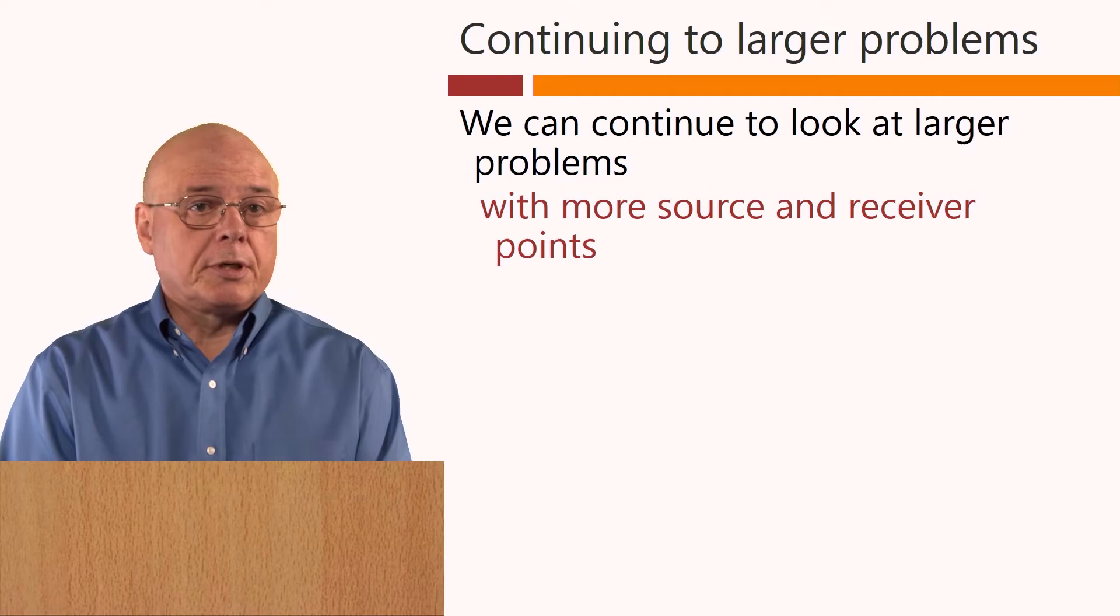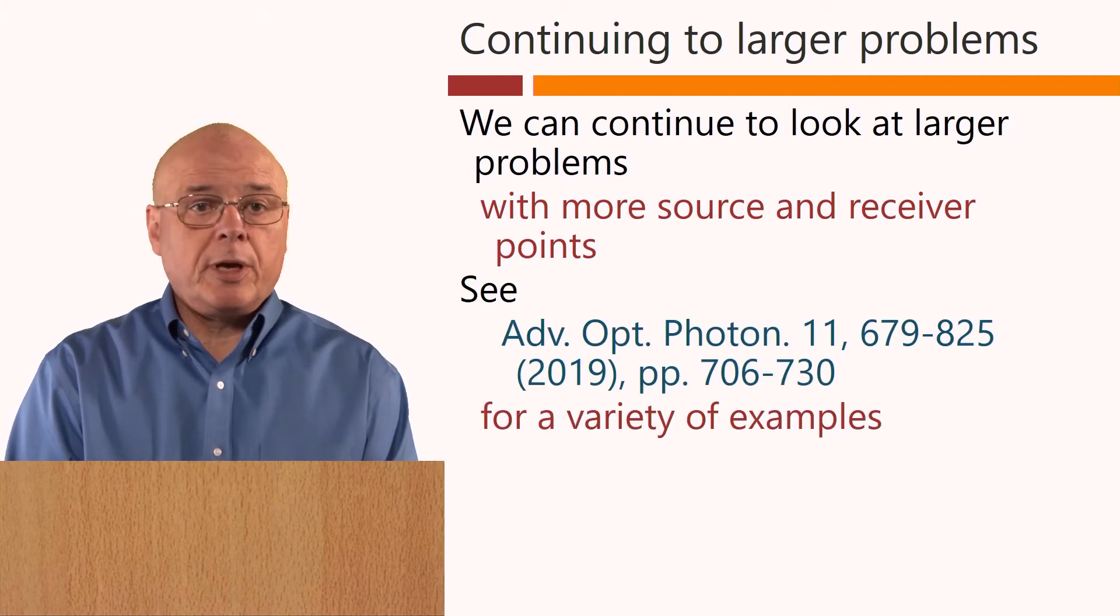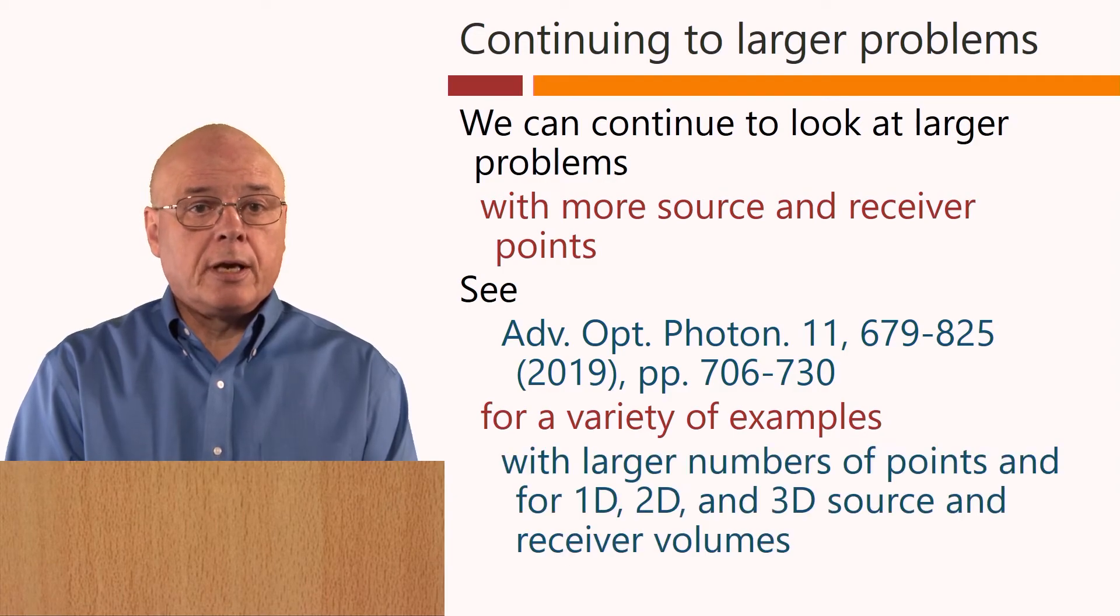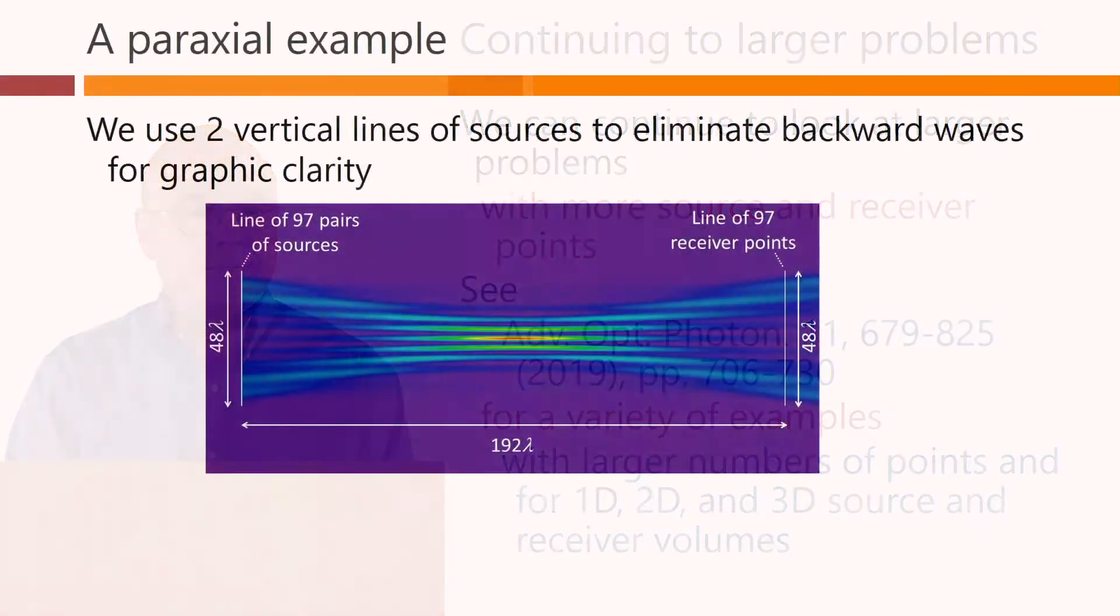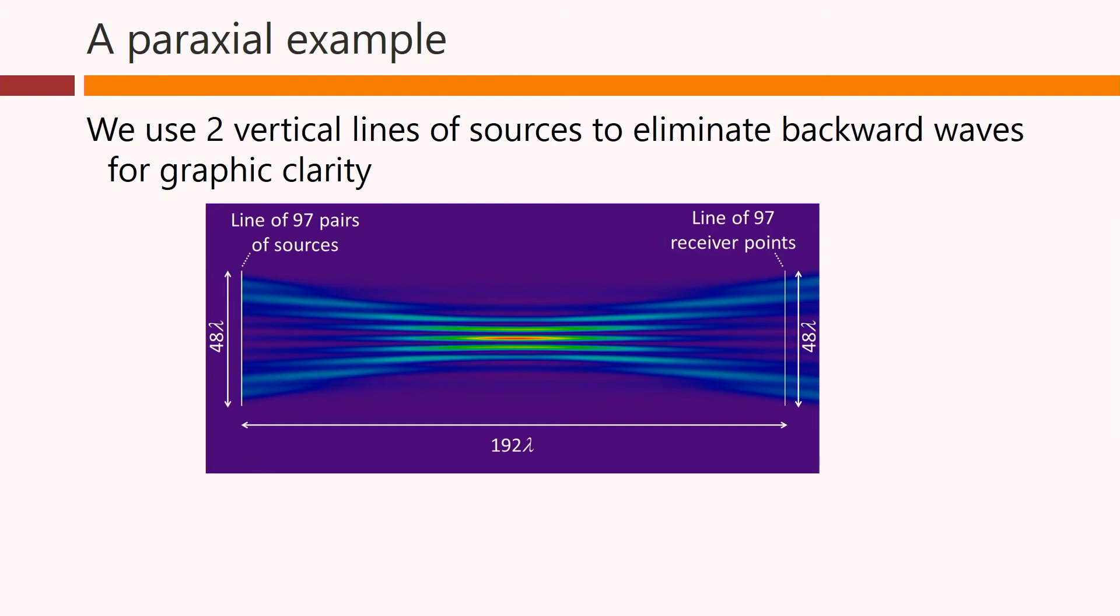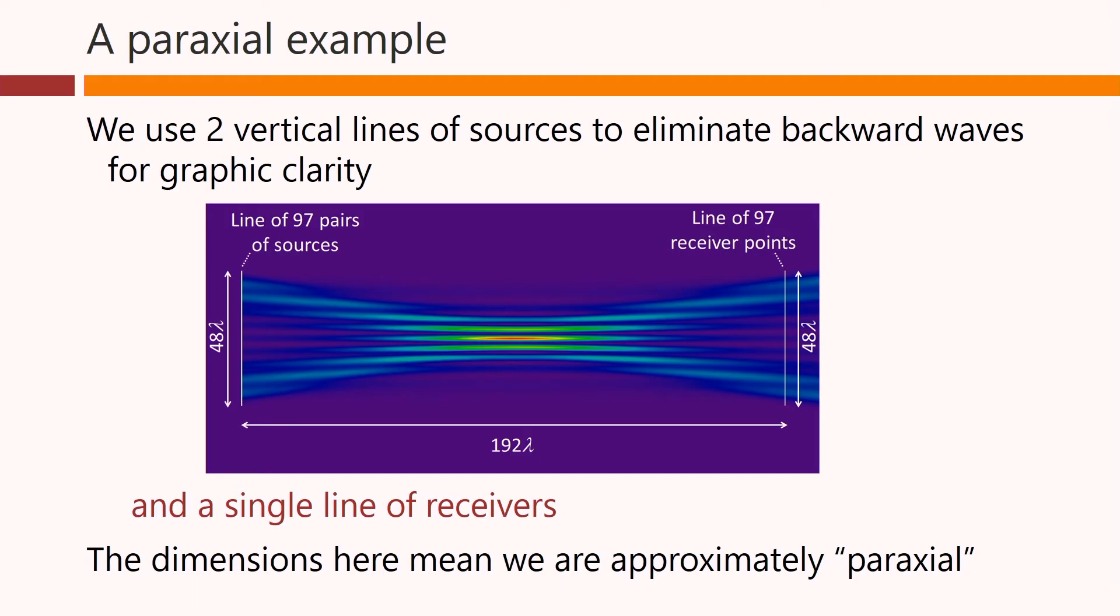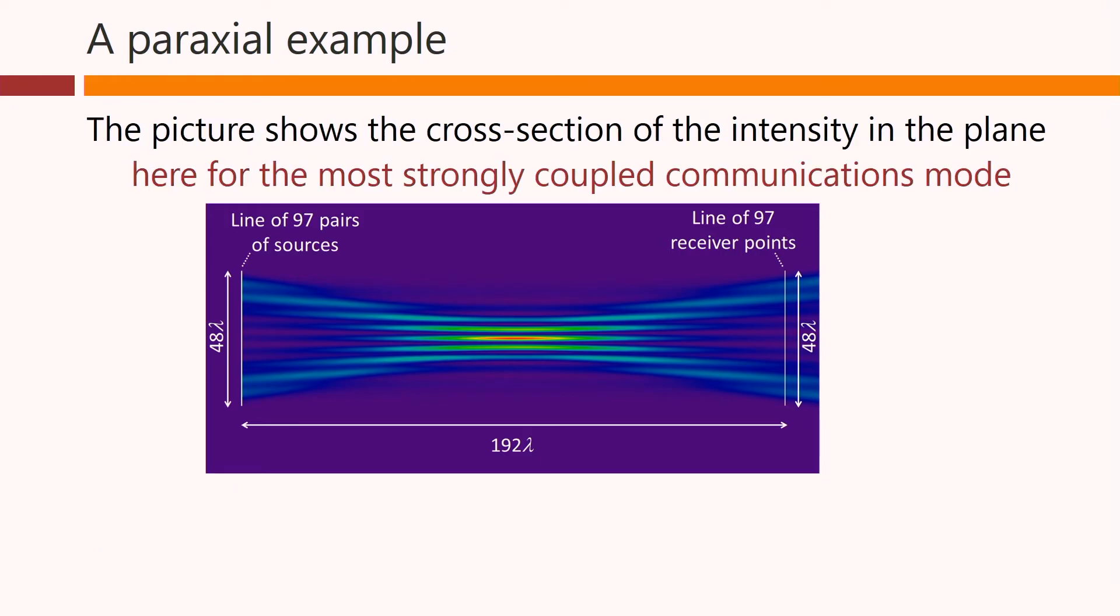We can continue to look at larger problems with more source and receiver points. In this paper, there is a variety of examples, including ones with larger numbers of points and with one-dimensional, two-dimensional and three-dimensional source and receiver volumes. Here, we have two vertical lines of sources, but very close together, but this is for a technical reason to eliminate backward waves for graphic clarity. This line of sources is over here. And we have a single line of receivers. The line of receivers is over here. But now we have 97 of each of these. The dimensions here mean we are approximately paraxial. The picture we are showing here shows the cross-section of the intensity in the plane, here for what is actually the most strongly coupled communications mode in this system.